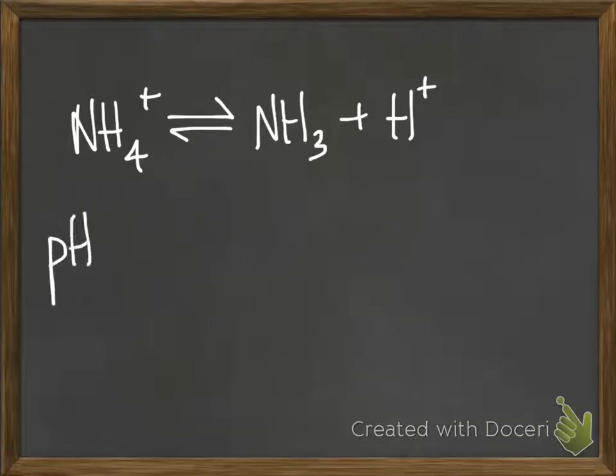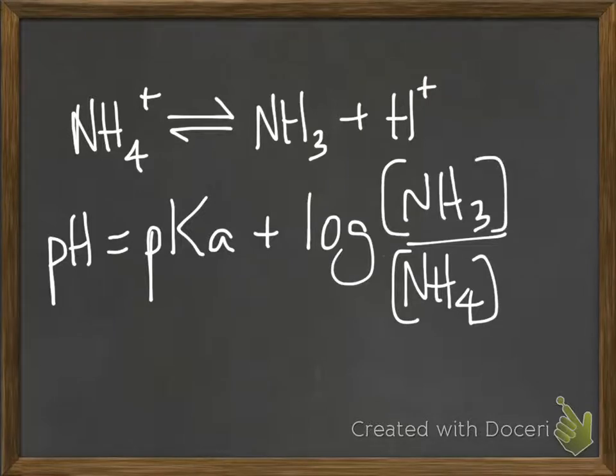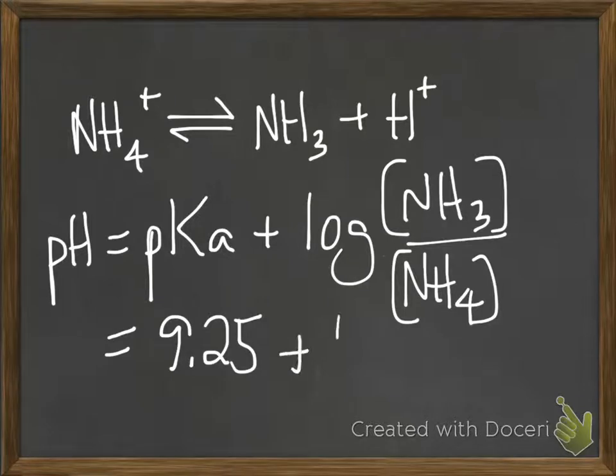You can set up a Henderson-Hasselbalch equation and plug in the pKa value, which is 9.25. But what do you plug in for the molar ratios?